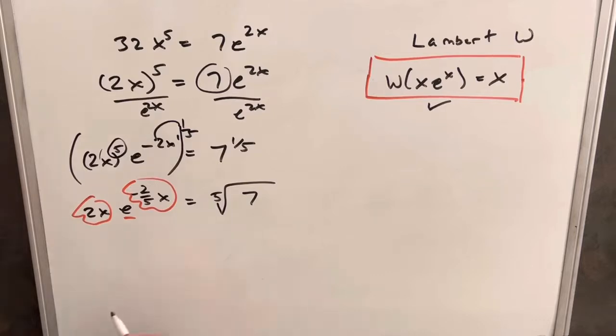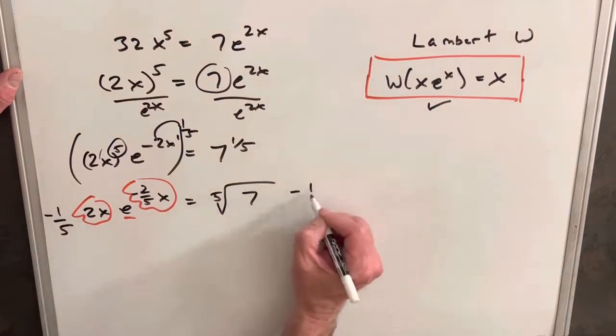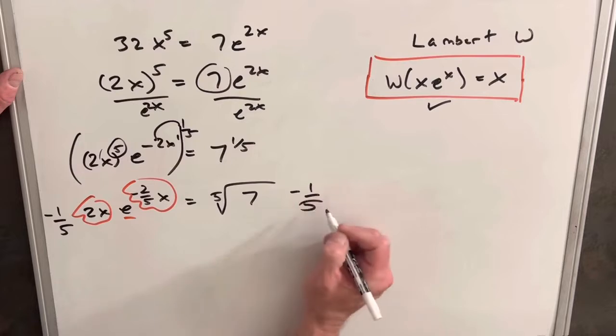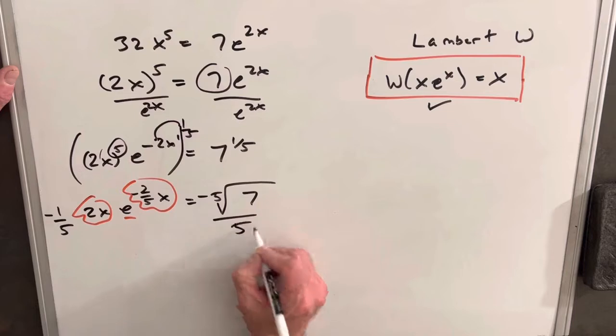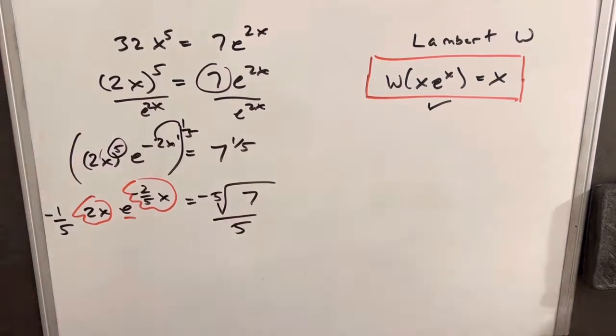What we need to do to fix this is let's multiply a minus 1/5th on the left side, and a minus 1/5th on the right. And actually, let's just save a step and kind of write it like this.